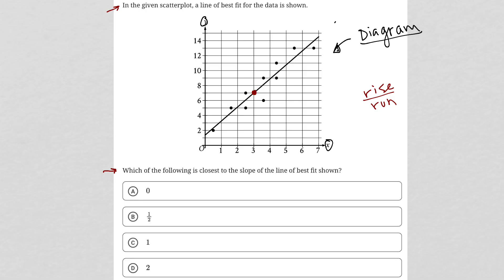This point here looks like it's at (3,7), and this one is close enough at (2,5). We have a rise of 2 and a run of 1. So the slope is closest to 2, and therefore our answer is choice D.